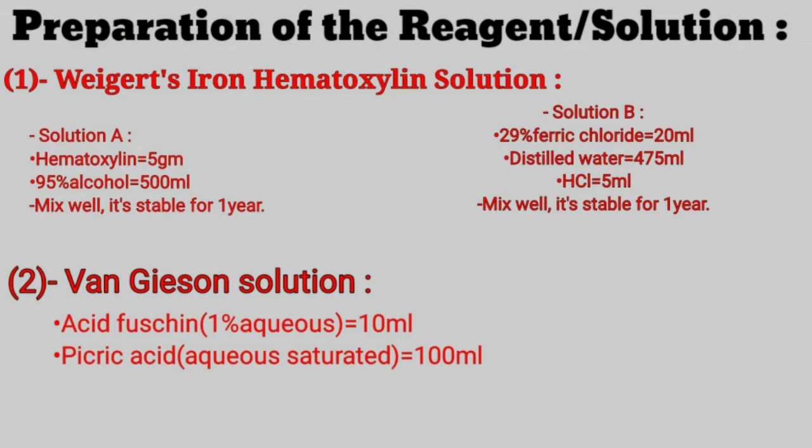For making Weigert's iron hematoxylin solution, we need two solutions. Solution A: hematoxylin 5 grams dissolved in 95% alcohol 500 ml. Mix these together. Solution A is stable and can be used for up to 1 year.